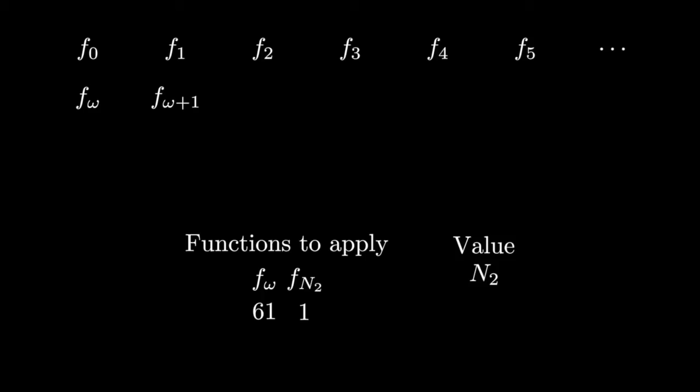Then we would apply fn2 on n2, and we do this 61 more times. This set of operations is very similar to what you would use to compute Graham's number. Graham's number would indeed be far larger than f_omega plus 1 applied to 63, but is far smaller than f_omega plus 1 applied to 64.